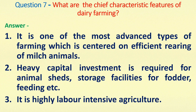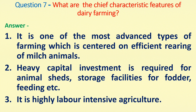Question number seven: What are the chief characteristic features of dairy farming? First feature: it is one of the most advanced types of farming, which is centered on efficient rearing of milch animals — a specific kind of animal reared for milk production.